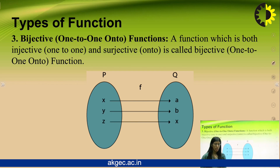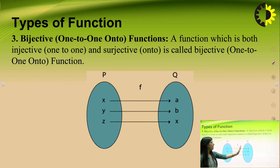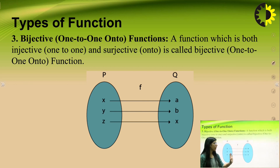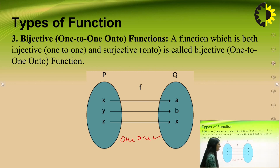The third type is the bijective function. A function is bijective if it is both one-to-one (injective) and onto (surjective). The mapping between elements of the first set to the second set must be one-to-one, and each element of the second set must be associated with some element of the first set. In the example, x maps only to a, y maps only to b, and z maps only to x — proving it is one-to-one. All three elements a, b, and x have pre-images, so it is also onto. Therefore, this is a bijective function.